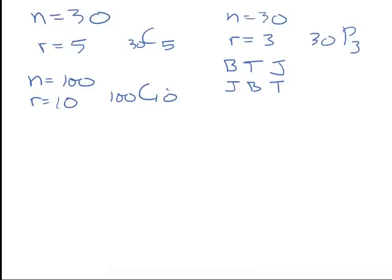It really is all about reading the question carefully and paying attention to what is being asked. Once we figure out how to count, we can figure out how to do probability. Remember, probability is good over total — so we need to know how to count both. With all of these combinations and permutations, we can always use the dash technique as well.